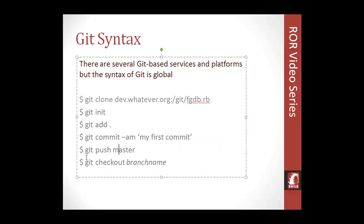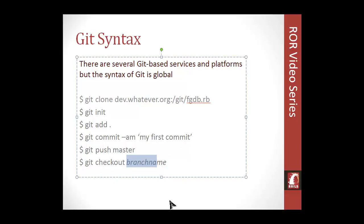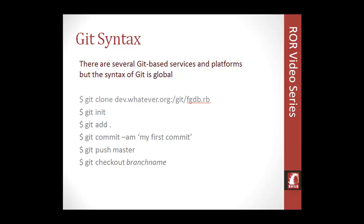When we use Heroku, there's just a tiny change to the push command — you include 'heroku' in the syntax. 'Git checkout' means you want to switch to a new branch. For example, if you have a repository for version 1.0 and want to start building 1.1, you can check out and go into another branch named for that version. Once you're done, you can merge that branch into the master. It's a really efficient system for version control.